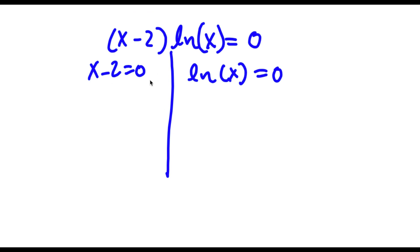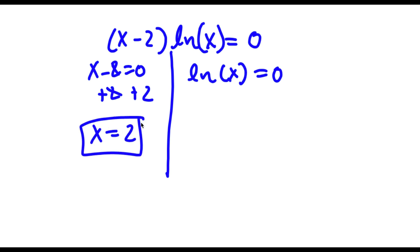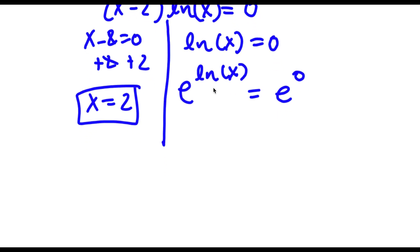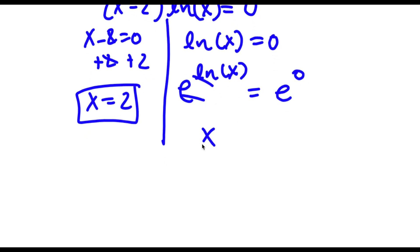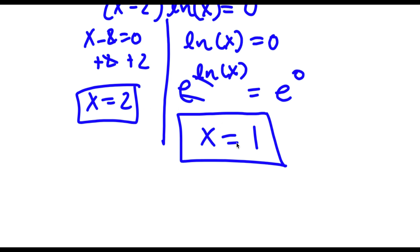I have x minus 2 equals 0 and ln x equals 0. For x minus 2 equals 0, I add 2 on both sides and get x equals 2, which was the solution we already found. For ln x equals 0, I take e to the power of both sides: e to the power of ln x equals e to the power of 0. Since e and ln cancel, I get x equals 1. So my two solutions are x equals 2 and x equals 1.